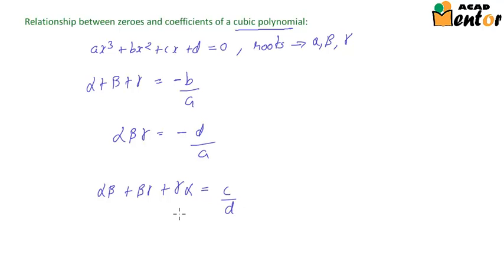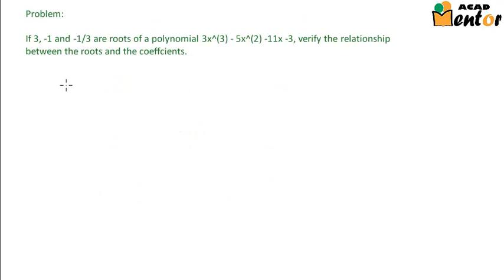Now we will look at an example to verify these three relationships. The problem states that if 3, minus 1, and minus 1/3 are roots of the polynomial 3x³ − 5x² − 11x − 3, verify the relationship between the roots and the coefficients.